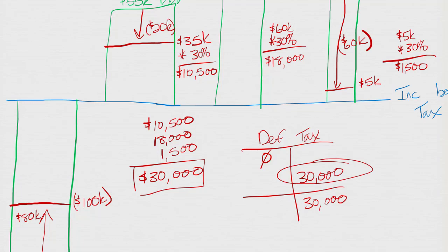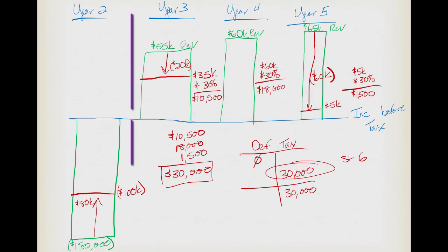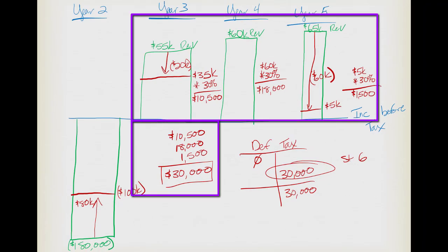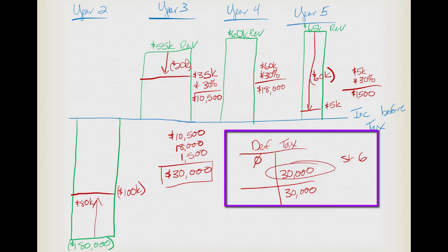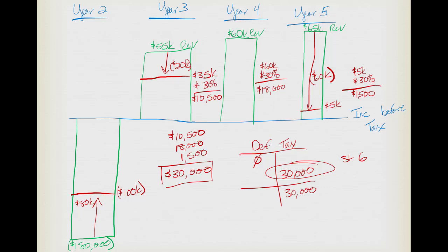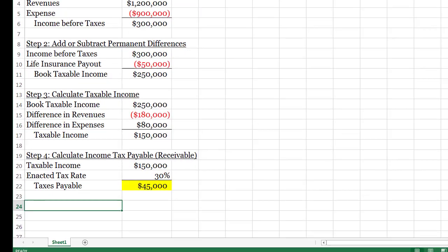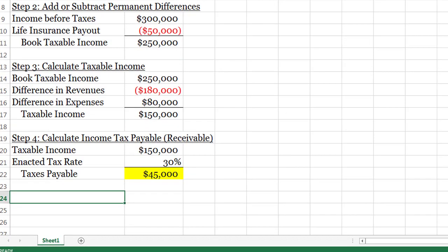All of the calculation portion is step five, and the ending adjustment is step six. Now that I know steps five and six I can do the journal entry — step seven. In future examples we'll do more of these calculations in Excel, but for now let's make the journal entry.